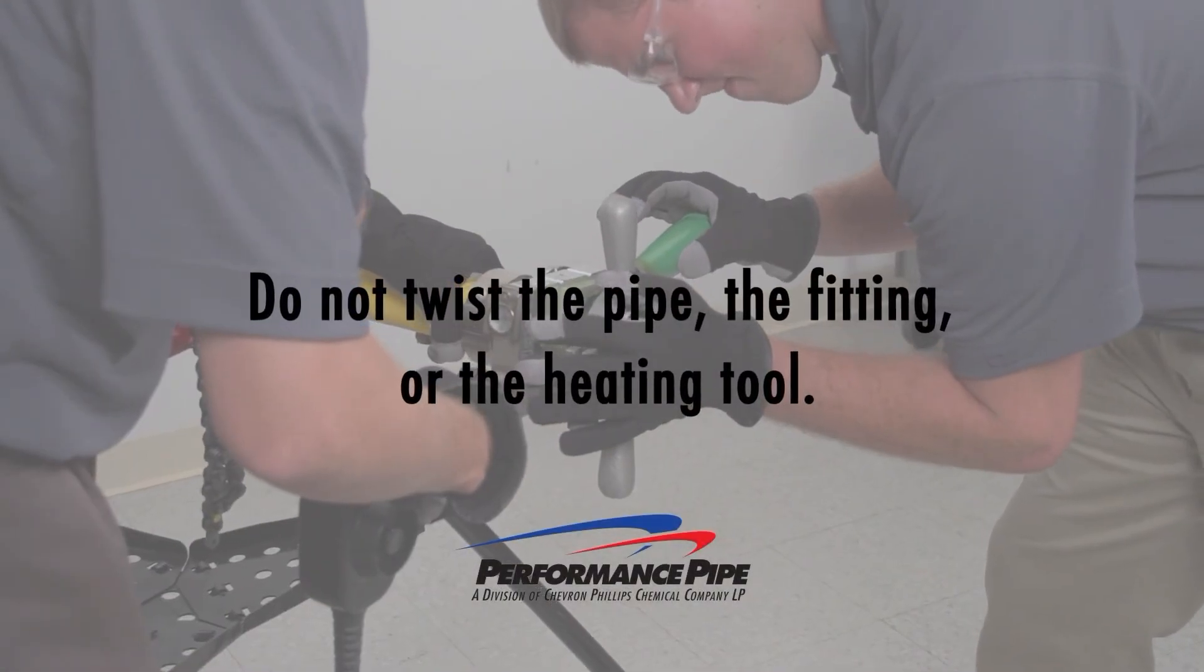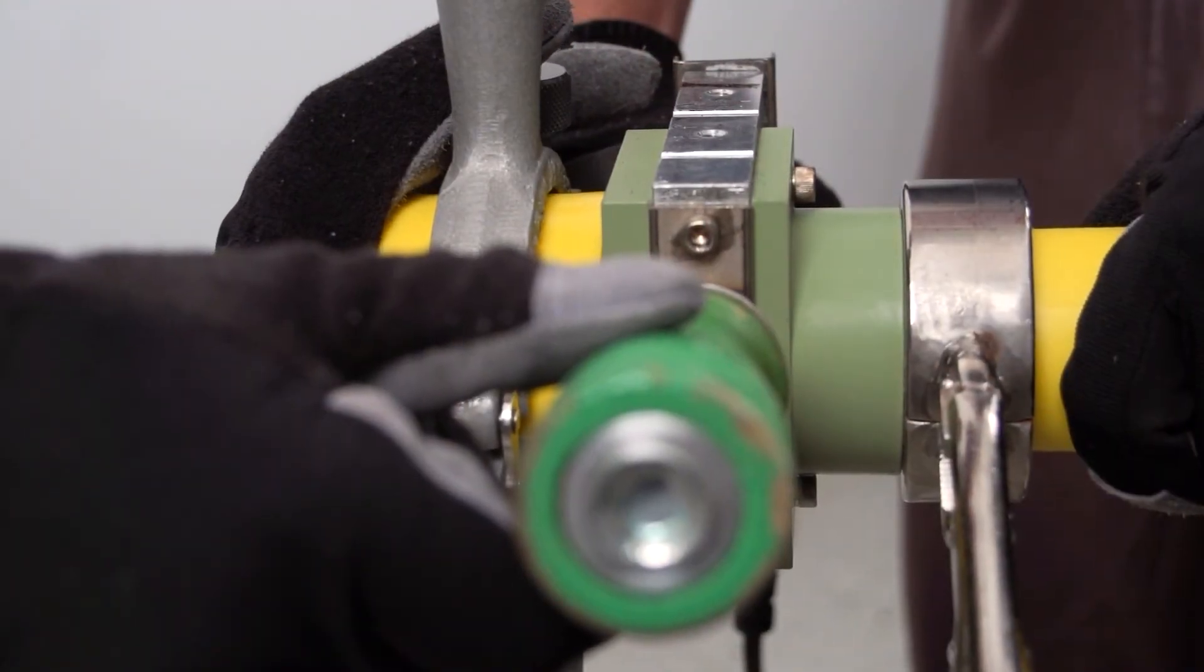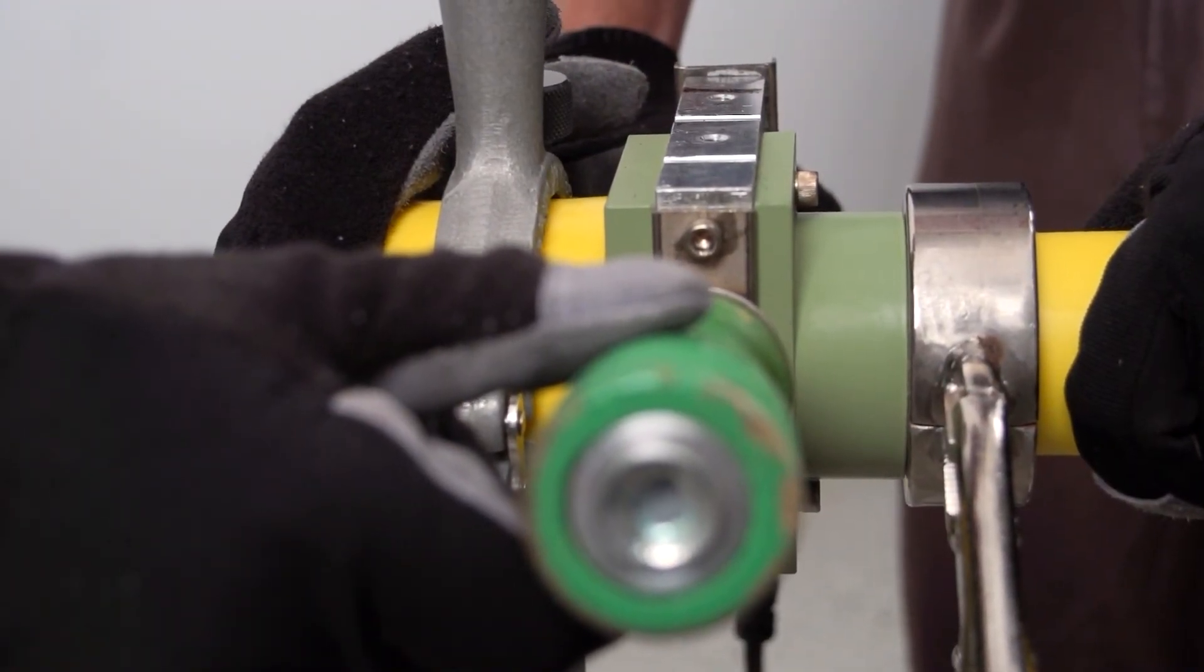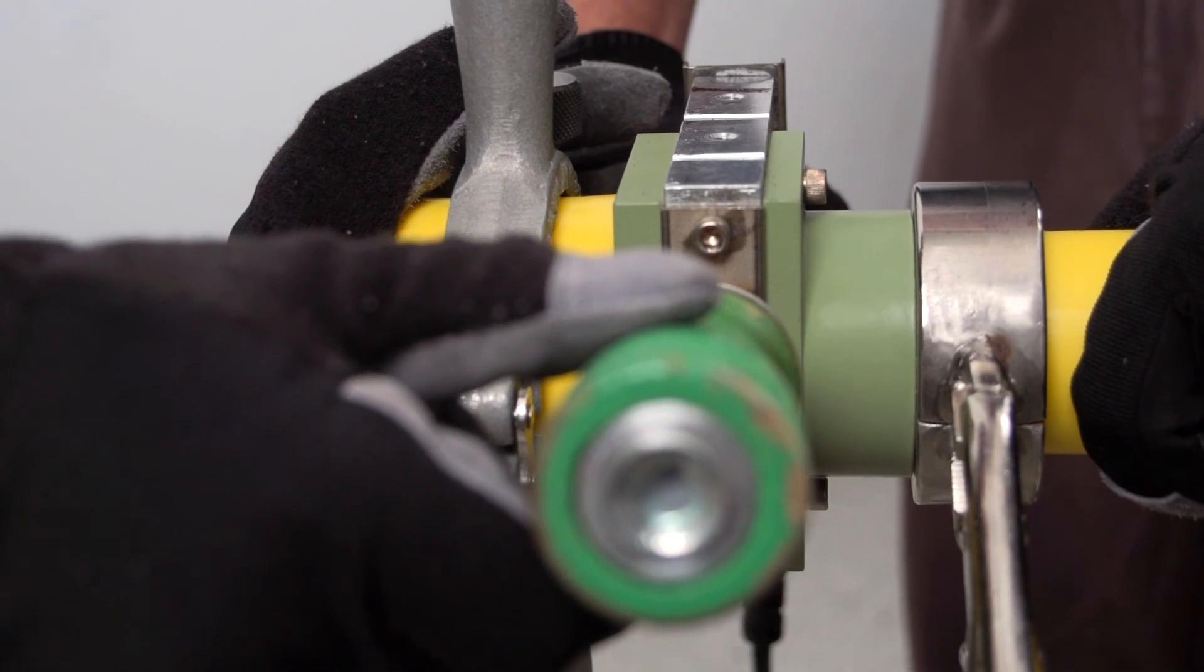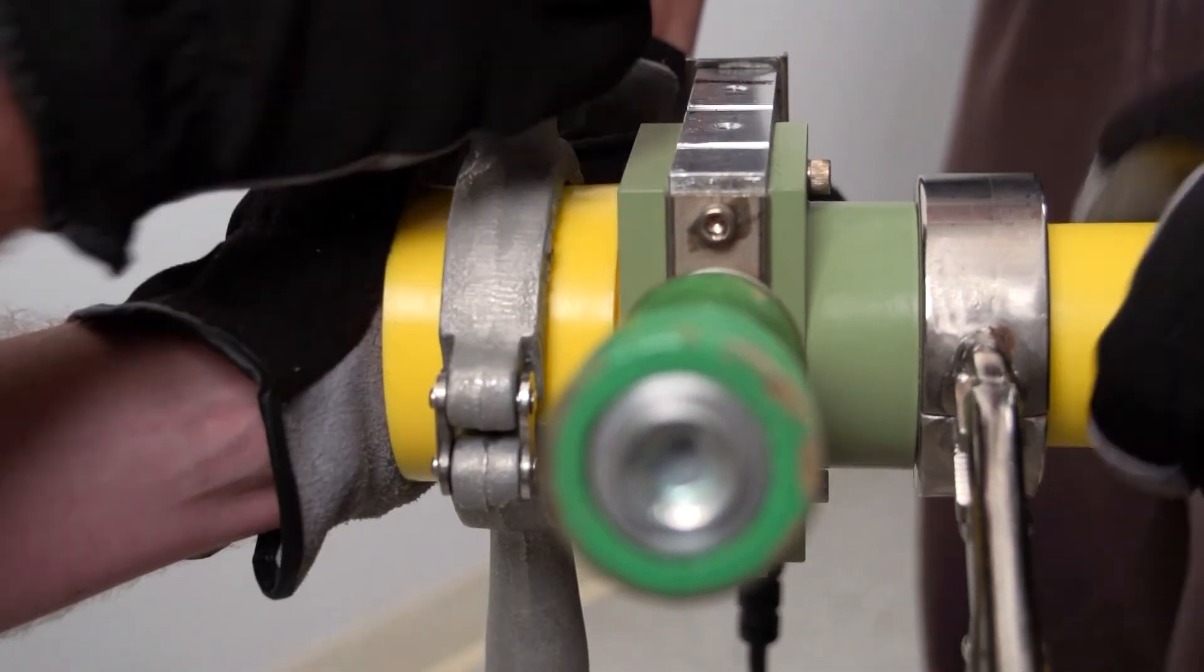Do not twist the pipe, the fitting, or the heating tool. At the end of the heating time, quickly and simultaneously remove the pipe and fitting from the heating tool using a snap action. Remove the pipe and fitting straight out from the heating tool faces. Do not twist or displace the melt. If the pipe or fitting are removed at an angle or twisted, melt can be displaced and the joint may leak or fail.